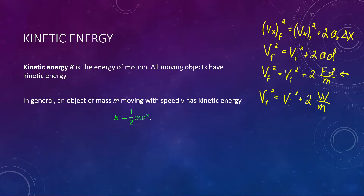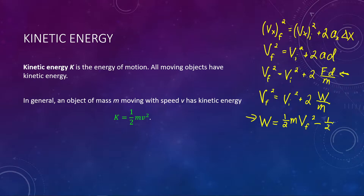We're getting somewhere with this because now we can rearrange this equation for work. Rewriting with work on the left-hand side, dividing everything by 2 and multiplying everything by m, we see: one-half m v final squared minus one-half m v initial squared. This is work equals a change — final minus initial — in the kinetic energy. So we've basically defined what kinetic energy is: one-half m v squared.